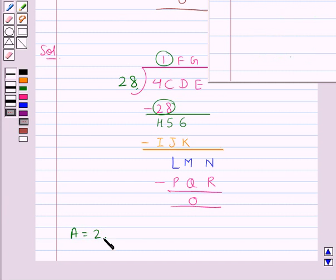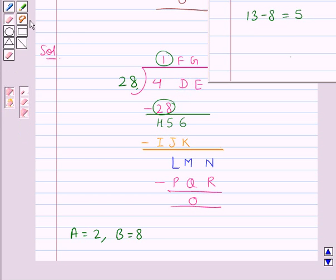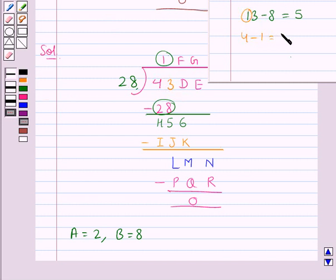Now next in place of C we should have some number such that its difference with 8 gives us 5. We know that 13 minus 8 is equal to 5, so in place of C we should have 3. Now this 1 would be subtracted from this 4, which gives us 3, and now we subtract this 2 from 3 which gives us 1. So in place of H we would have 1. So now we have got the values for C and H also. C is 3, H is 1.